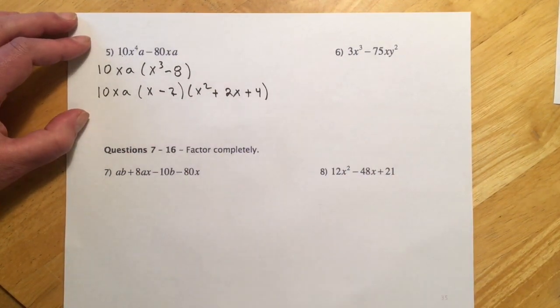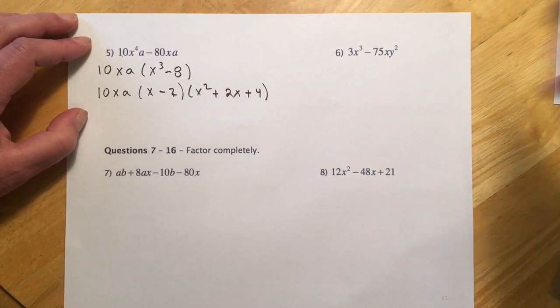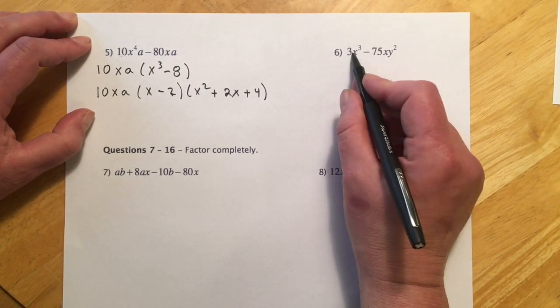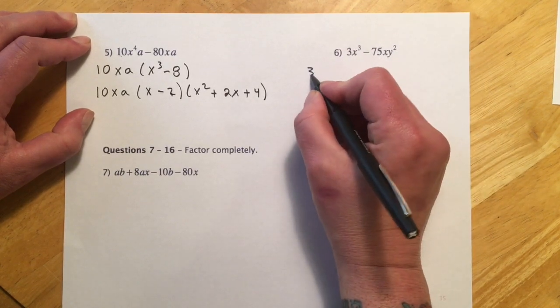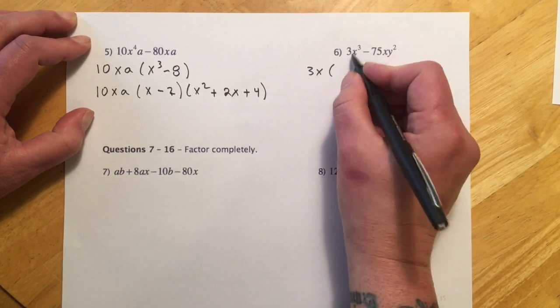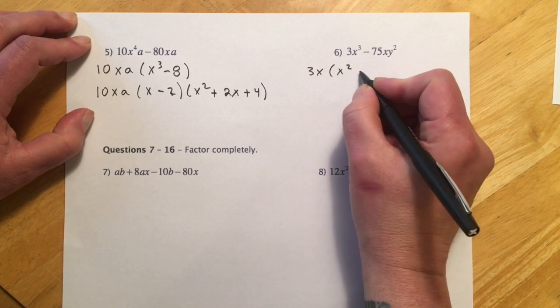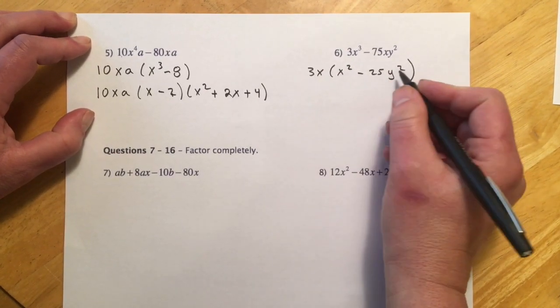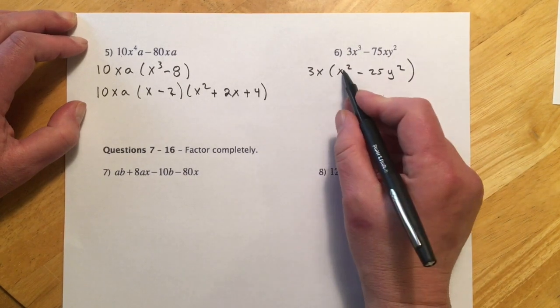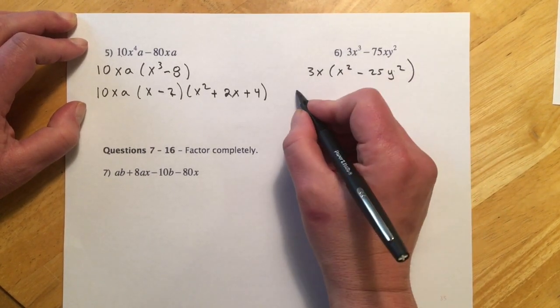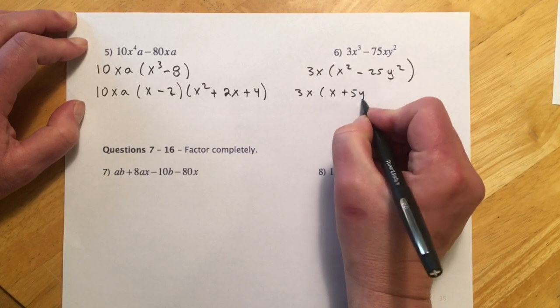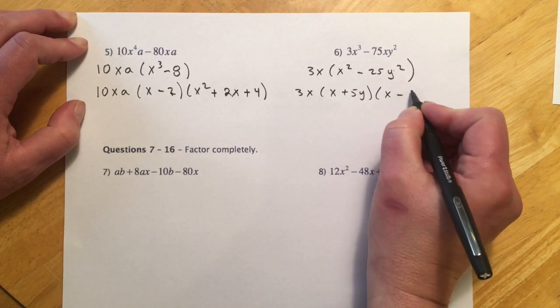This last one, so this also has a GCF. So it looks like I can do, there's X's in both places and 3's in both places. So I'll do a 3X. And that's going to make this plain X squared minus 25Y squared. And then once I have that, now I can see the difference of squares there. So that's just going to be our 3X. X plus 5Y and X minus.